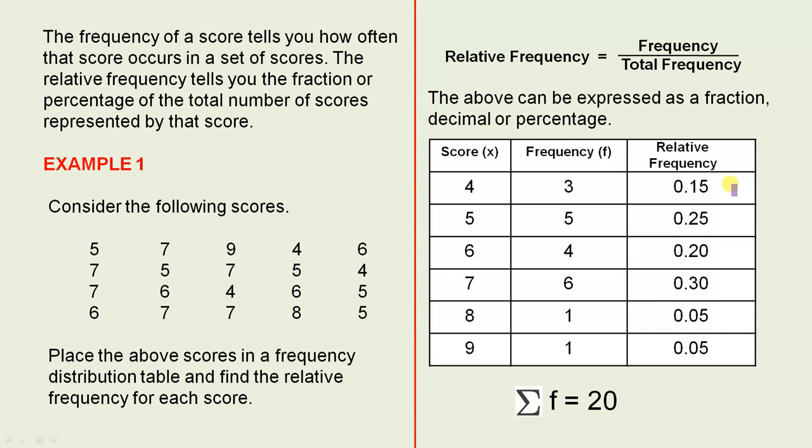That's quite easy to do with a calculator, just go 3 division 20 equals, and that gives you 0.15.